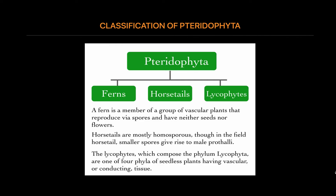Horsetails are very primitive plants belonging to the genus Equisetum, vascular plants that reproduce by spores in a similar fashion to ferns. The plant consists of long, hollow, narrow stem segments with minuscule, non-photosynthetic leaves.